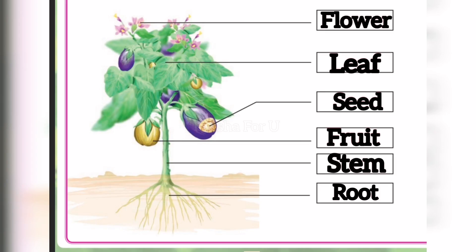The parts of a plant are flower, fruit, seed, leaf, stem, and root.